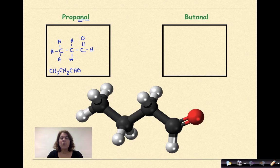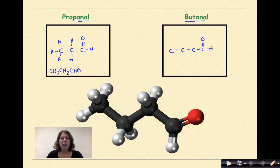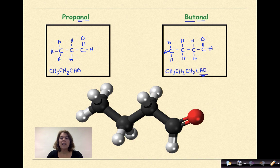Let's do another example: butanal. Butanal means four carbons, with single bonds between all the carbons for the -AN, and then the -AL tells us we have a double-bonded oxygen on an end carbon. We need one more hydrogen there, and then fill in the remaining bonds and hydrogens. The condensed structural formula is CH₃CH₂CH₂CHO — again, you must write CHO to indicate the presence of the aldehyde carbonyl group.